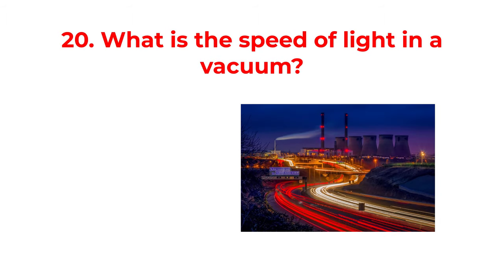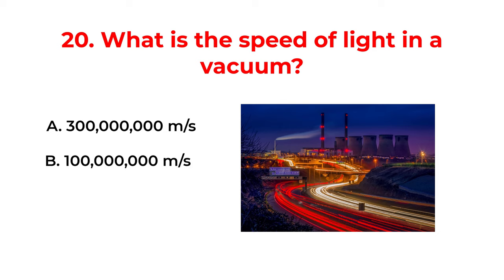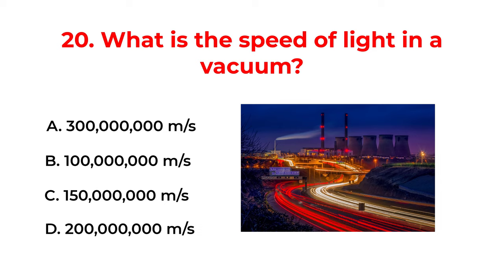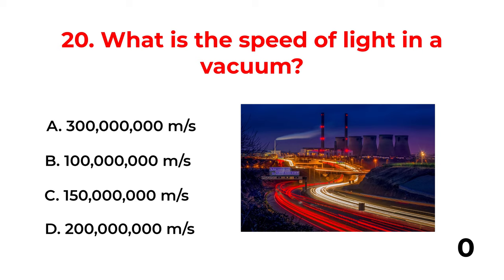What is the speed of light in a vacuum? A. 300 million meters per second. B. 100 million meters per second. C. 150 million meters per second. D. 200 million meters per second. The correct answer is option A: 300 million meters per second.